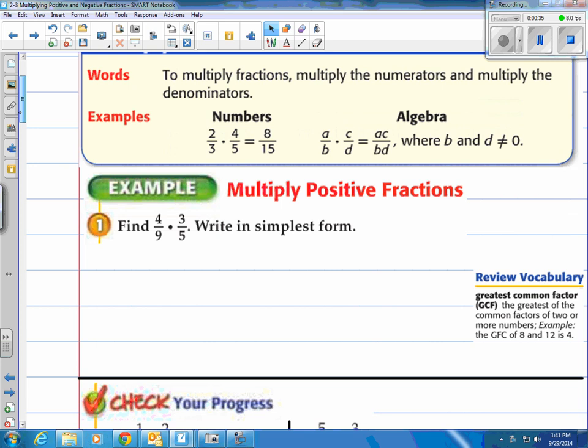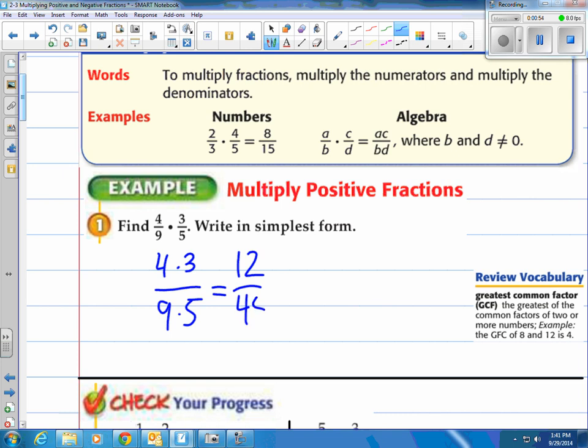Let me show you example 1 here. I'll have you do a couple at the bottom there. So they have 4/9 times 3/5. They say write it in simplest form. Well, like they said, take the tops, multiply them, take the bottoms, multiply them, and you've got 12/45.